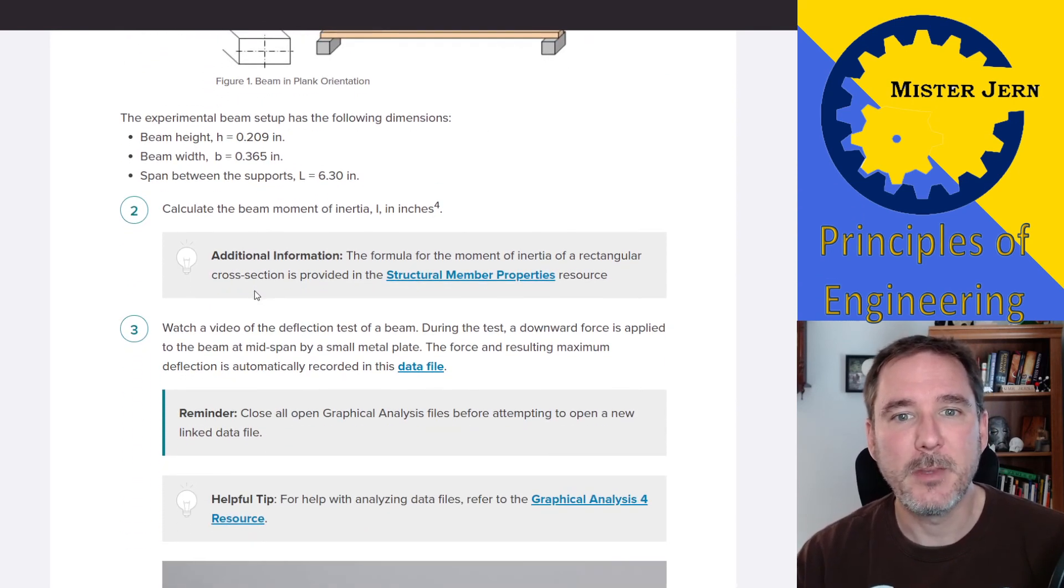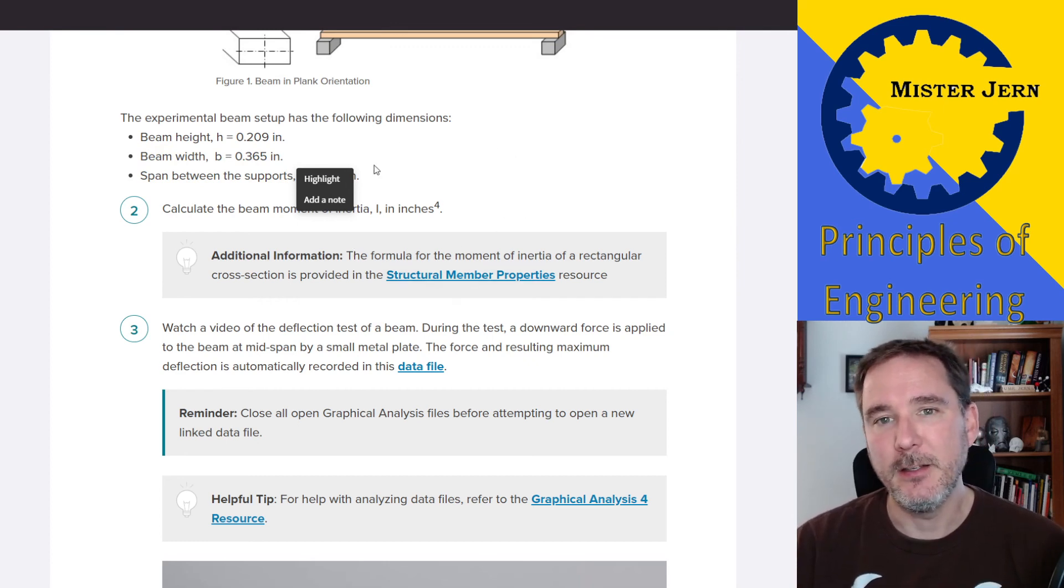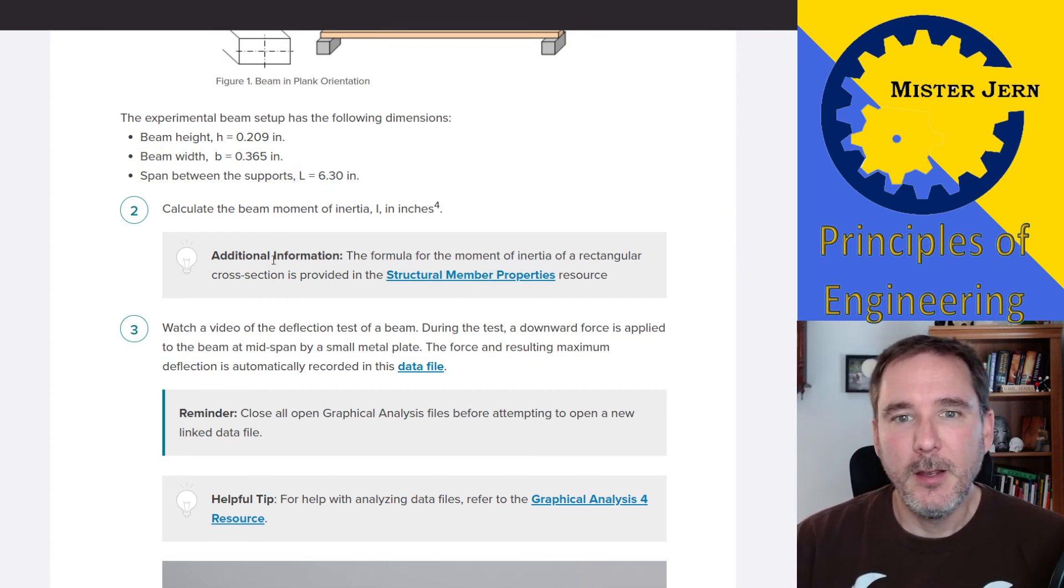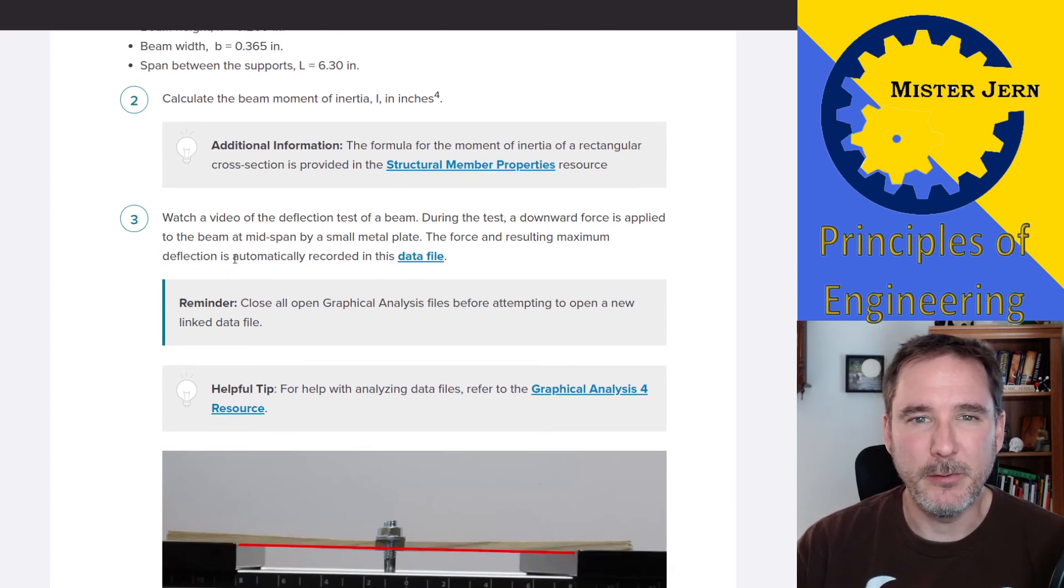Step two: calculate the moment of inertia for this beam in inches to the fourth. So how do you do that? Well, you go back and you look at the formula for moment of inertia, and you will find it. It's fairly straightforward. Here's some additional information. You can watch this. Look at this information right here. That should be helpful to you.